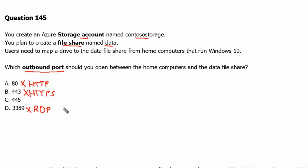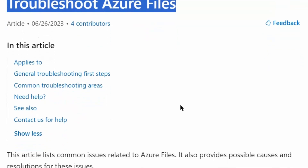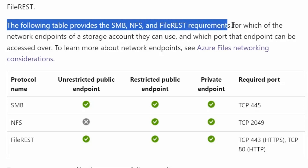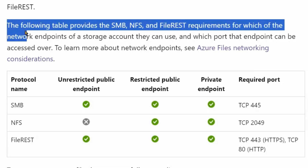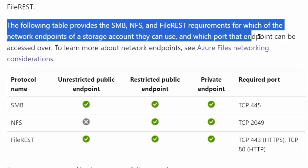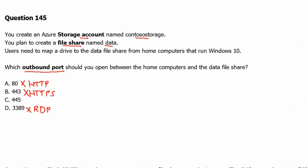Therefore we are left with option C: port 445. Let's verify this on the documentation site. We are on the learn.microsoft.com Troubleshoot Azure Files page. Scrolling down, the table provides SMB, NFS, and file REST requirements — which network endpoints of a storage account they can use and which port those endpoints can be accessed over. Therefore, port 445, option C, is the correct answer.